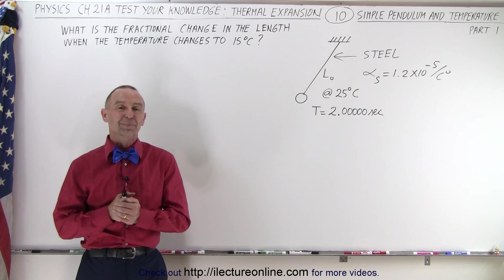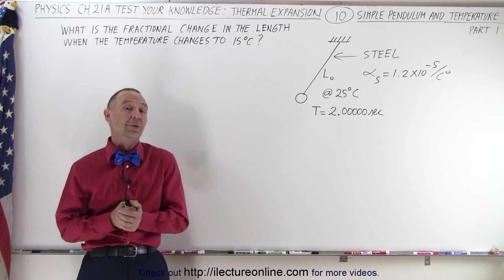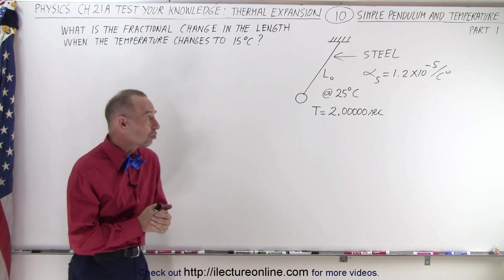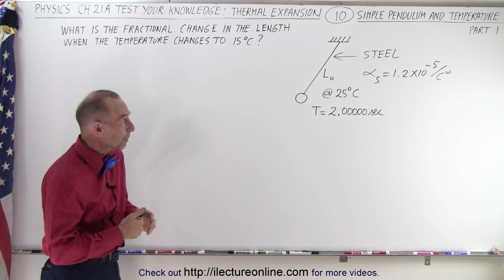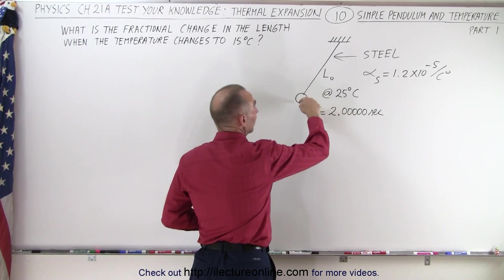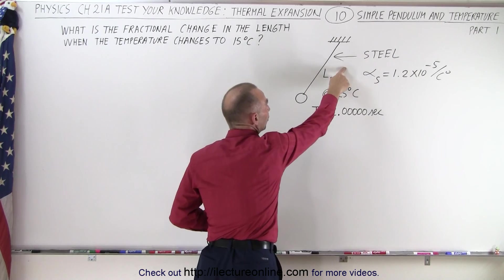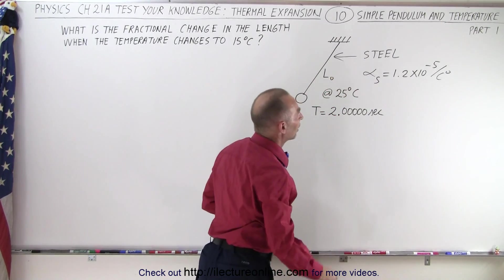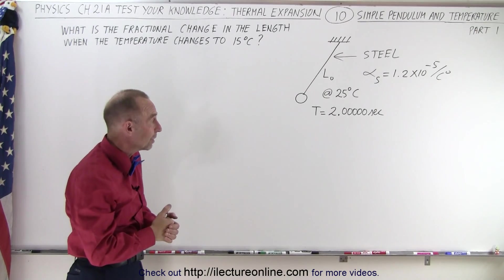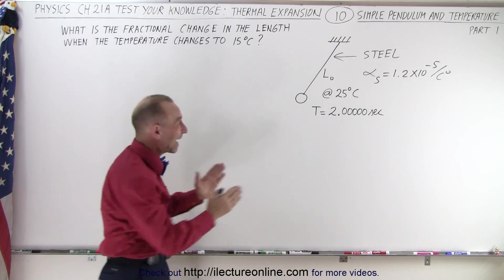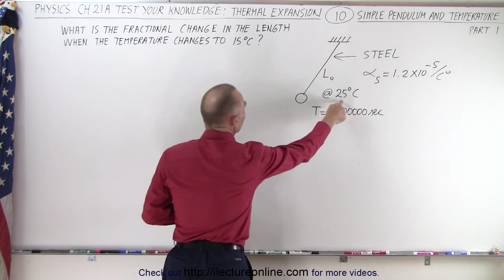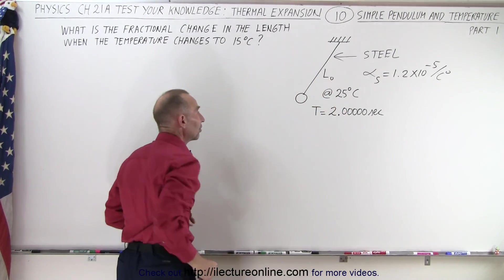Welcome to Electron Line. Here's another pendulum problem involving linear expansion due to a change in temperature. We start with a pendulum that has a certain initial length at a temperature of 25 degrees centigrade. The wire is made out of steel that has a coefficient of linear expansion of 1.2 times 10 to the minus 5 per centigrade degree. The period is exactly 2 seconds. We're going to change the temperature from 25 degrees centigrade to 15 degrees centigrade.